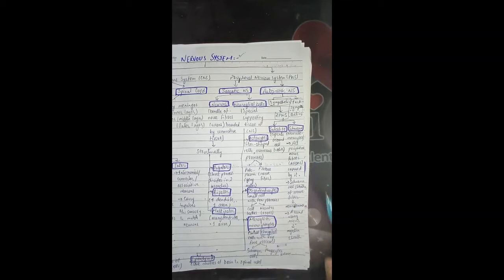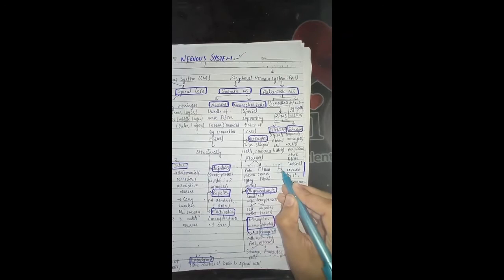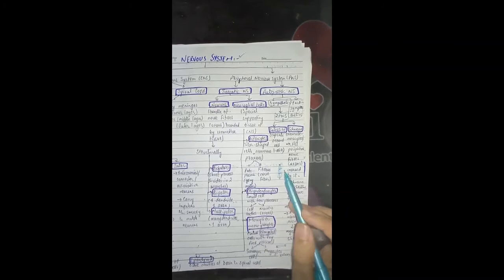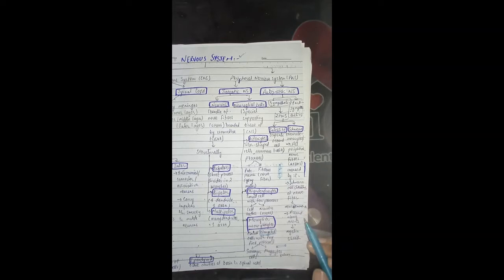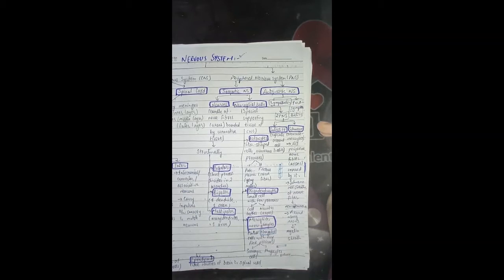Each axon is covered by a Schwann cell, forming a sheet called the neurilemma. We have Schwann cells, also called neurolemmocytes, and the sheet is called neurilemma. We also have the myelin sheath, which provides further covering and protection. The myelin sheath is lipid in nature and helps with nourishment.